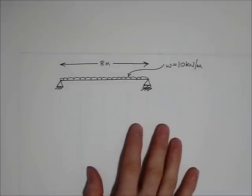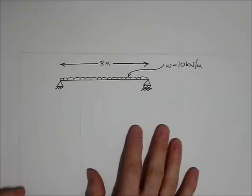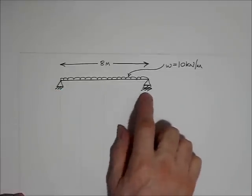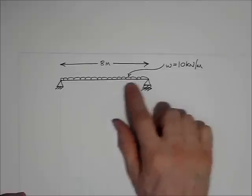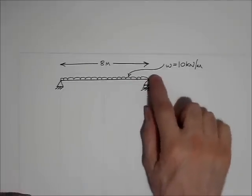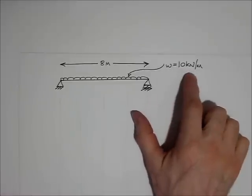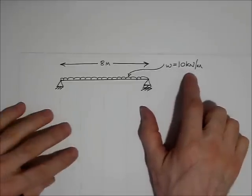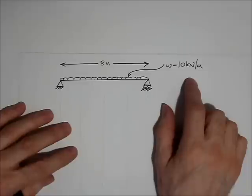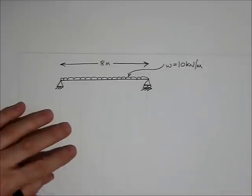Here's a tutorial for a simply supported beam that's 8 metres long supporting a uniformly distributed load (UDL) of 10 kN/m. We're going to look at the deflected shape of the beam roughly, and then we're going to see if we can draw the bending moment diagram for the beam.